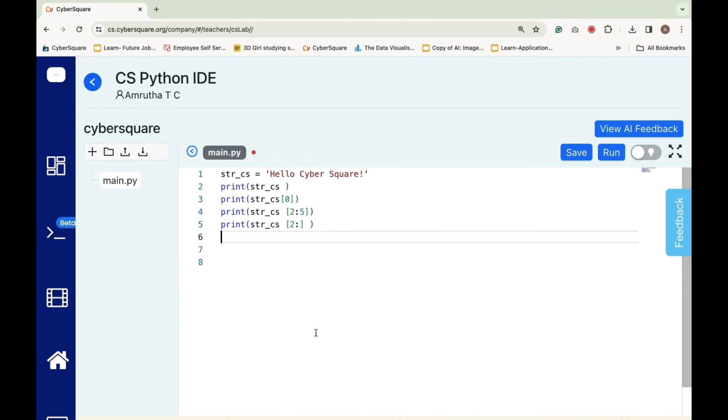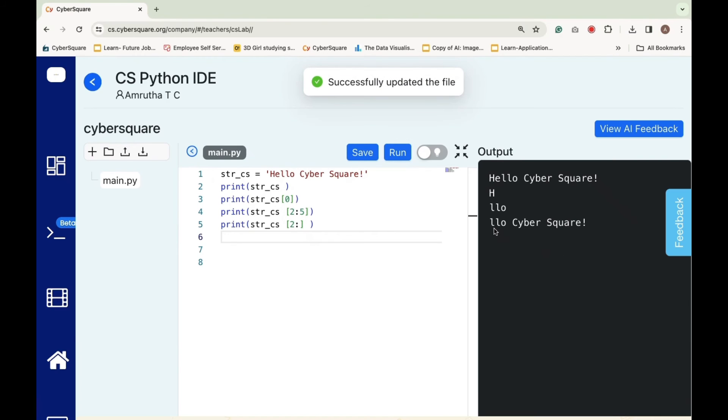istr_cs[2:] prints a substring of istr_cs, starting from the character at index 2 until the end of the string.